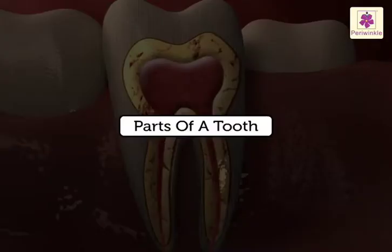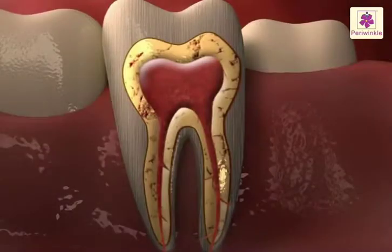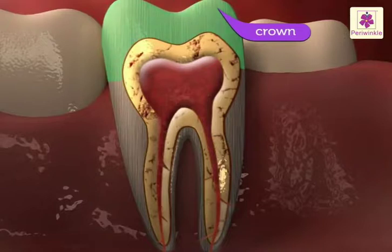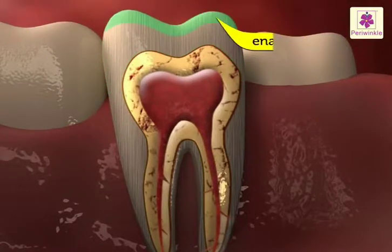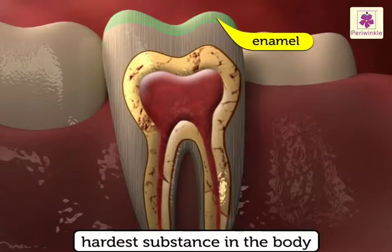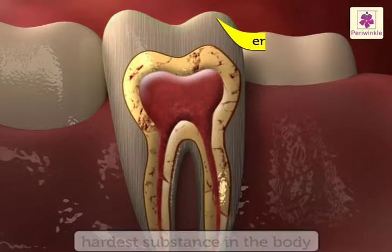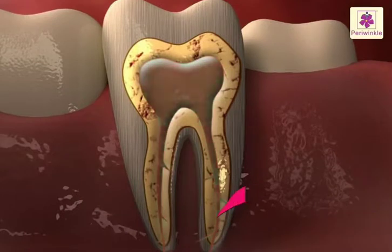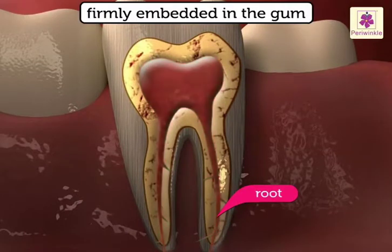Parts of a Tooth. The portion of the tooth which can be seen above the gum is called the crown. It is covered with enamel, which is the hardest substance in the body. The root is firmly embedded in the gum.